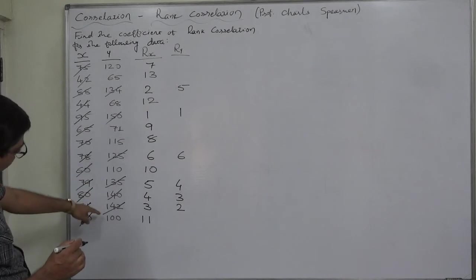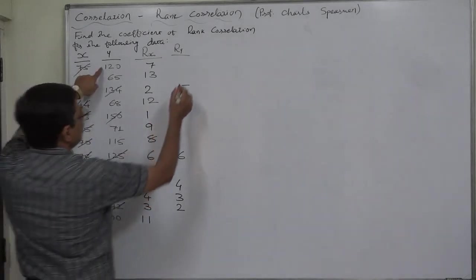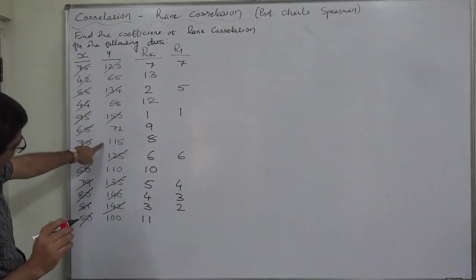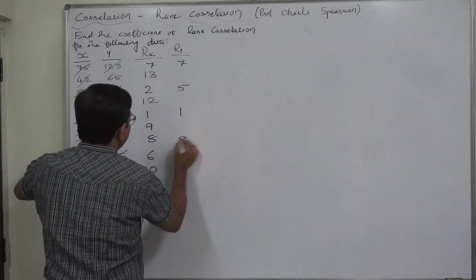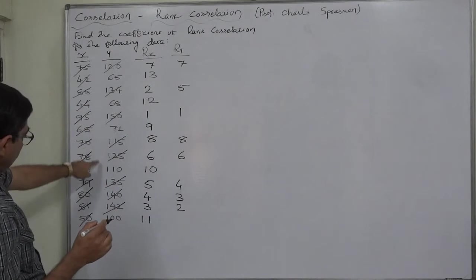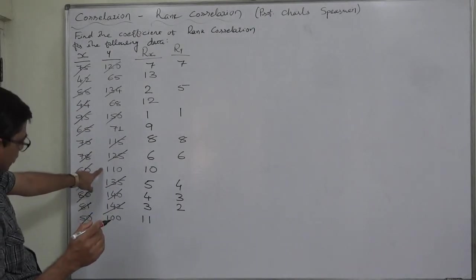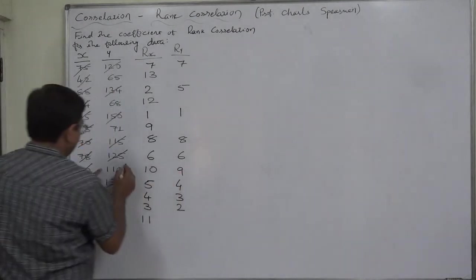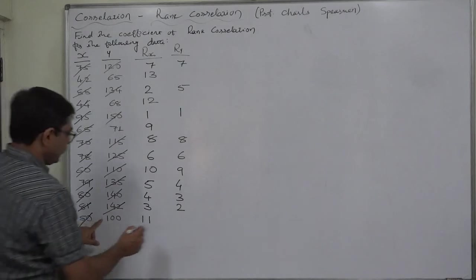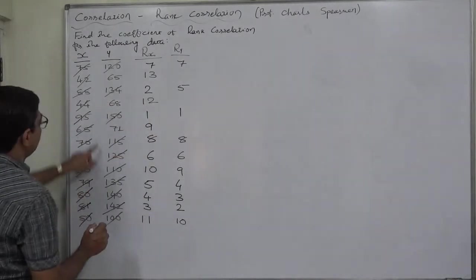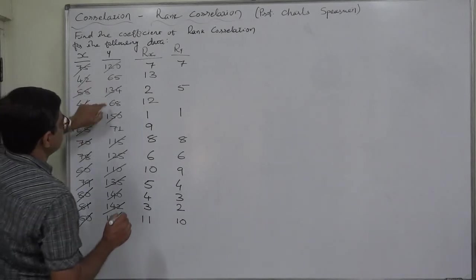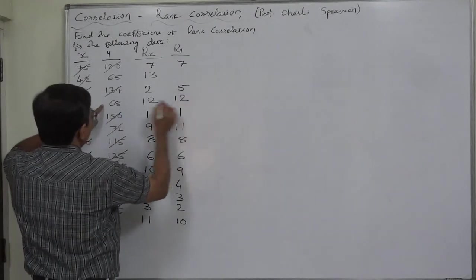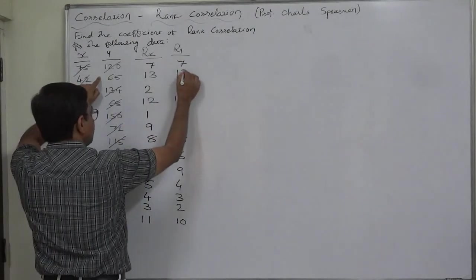After 125, the largest value is 120. It will be assigned rank 7. After 120, 110 seems to be the highest. It will be assigned rank 8. 110. Yes. 110 can be assigned rank 9. 100 can be assigned rank 10. And then from outstanding 3, 71, 68, 65. 71 will be assigned rank 11. 68 will be assigned rank 12. 65 will be assigned rank 13.